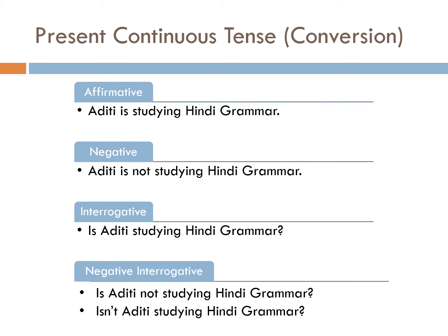Let's now discuss the conversion of a sentence in affirmative form into negative, interrogative, and negative interrogative. Affirmative sentence का example लेते हैं: Aditi is studying Hindi grammar. इसको negative में convert करना है — we simply add 'not' after the helping verb. Helping verb क्या है? Is. तो negative form बन जाएगा, applying the rule: Subject plus is/am/are plus not plus first form of verb plus -ing plus object.